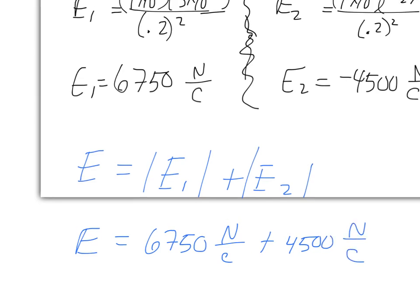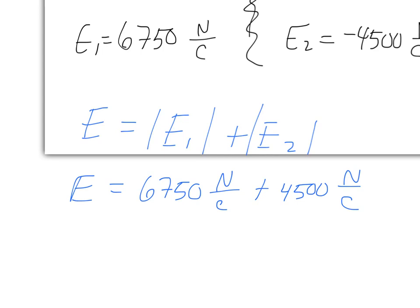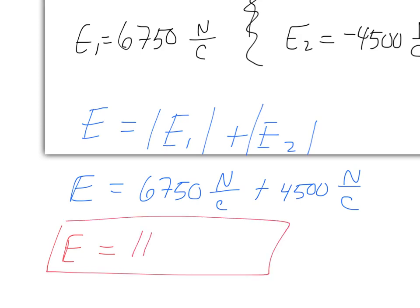Both of these electric fields want a particle in the middle to move to the right — the negative one is pulling it, and the positive one is pushing it, but both are moving it toward the right. So the total electric field is the sum of both, giving us approximately 11,250. You're summing these values together because they're both directed to the right.